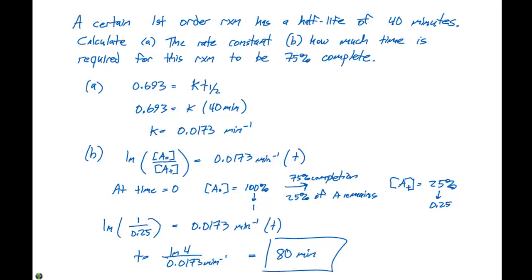This particular question asked us how much time is required to get 75% completion of this reaction. 75% completion means you're going to have 25% of your initial concentration remaining. So we plug those values into our concentrations, use the K from the half-life expression, and then solve for T, which in this case is 80 minutes.